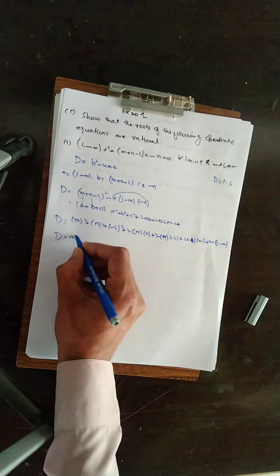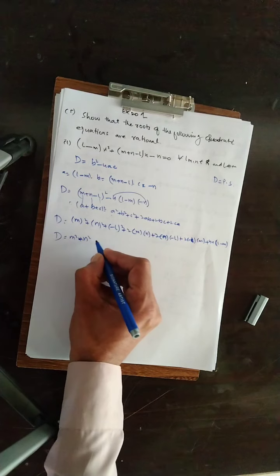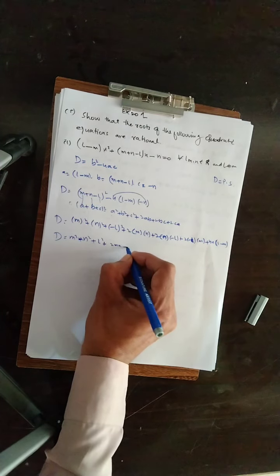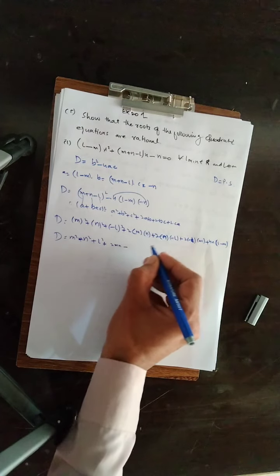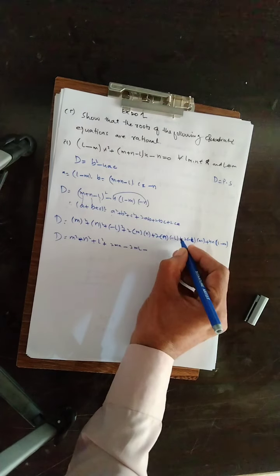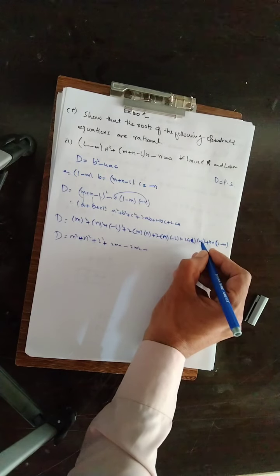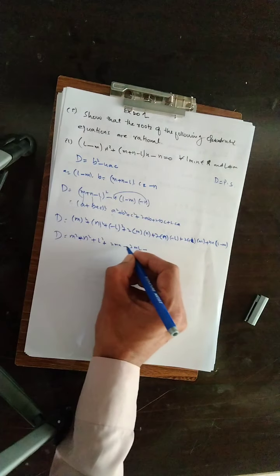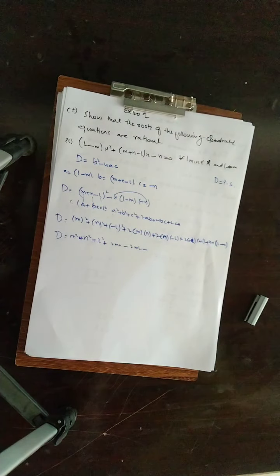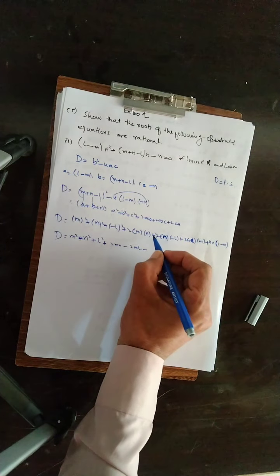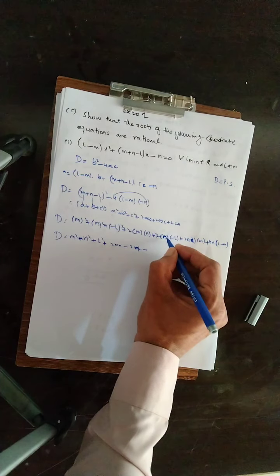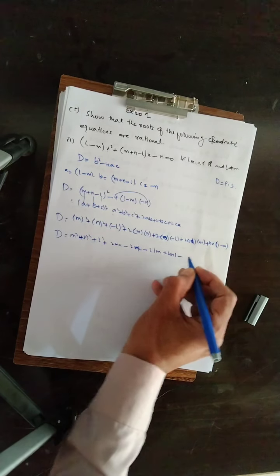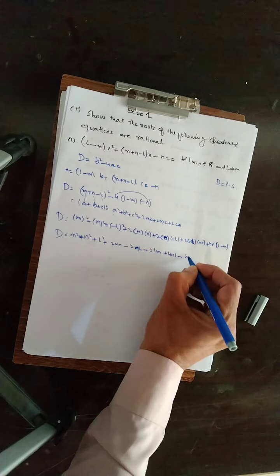M کا square M² ہوگا، N کا square N² بنے گا، اور square کی وجہ سے minus ختم ہو کر L² ہوگا۔ 2MN ہوگا، plus into minus سے minus 2ML ہوگا۔ NL کو multiply کریں تو NL ہوگا، پھر 2LM ہوگا، plus 4NL اور 4MN ہوگا۔